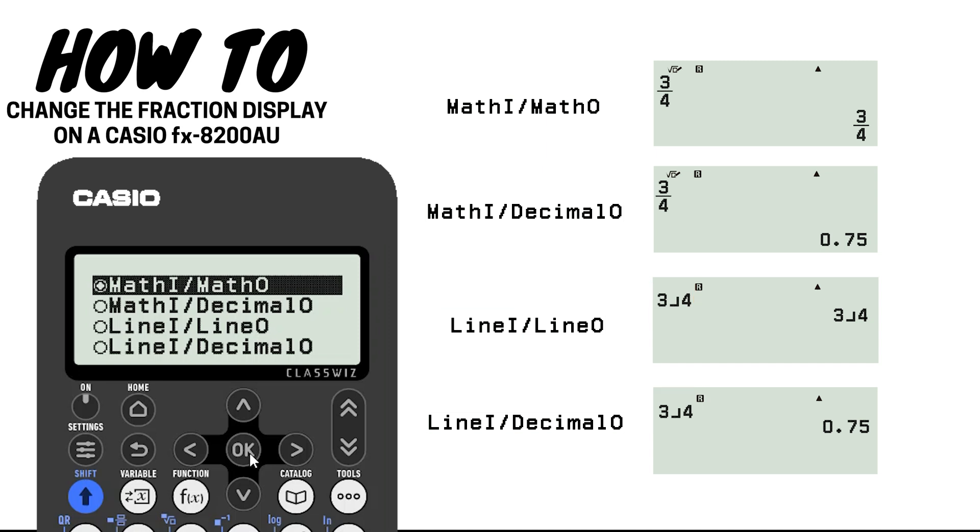You can then decide whether you want your output to remain as a fraction or default to a decimal answer. Choose the option that best suits your preference by scrolling up and down and pressing OK.